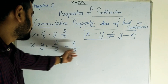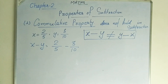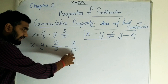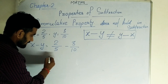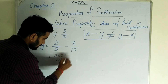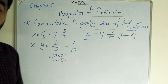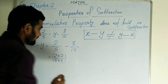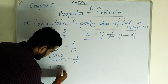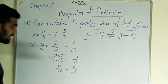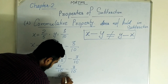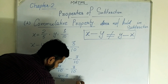First of all, change the first rational number into its equivalent form such that the denominators are the same. The LCM of 5 and 10 is 10. We multiply 2 in the numerator and denominator of the first fraction, giving us 4 by 10. So we have 4 by 10 minus 3 by 10, which gives us 1 by 10.